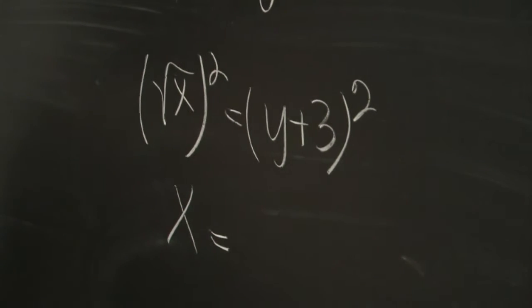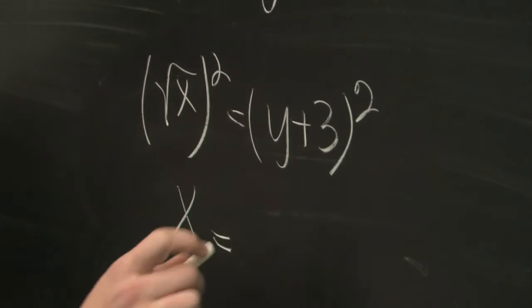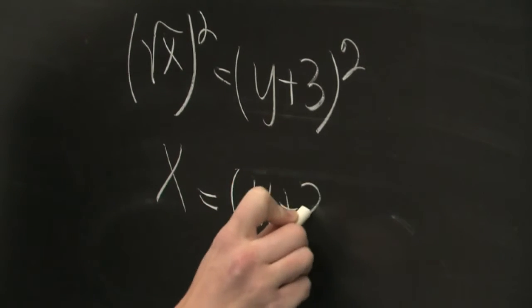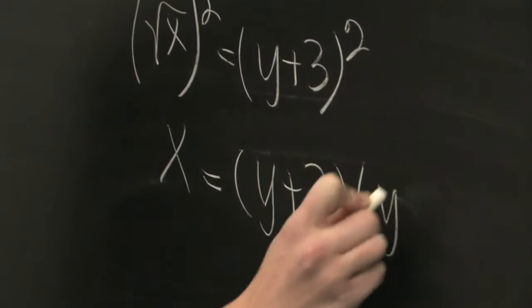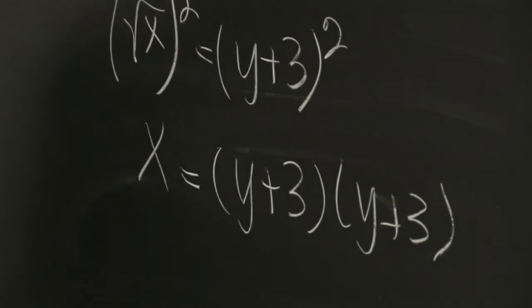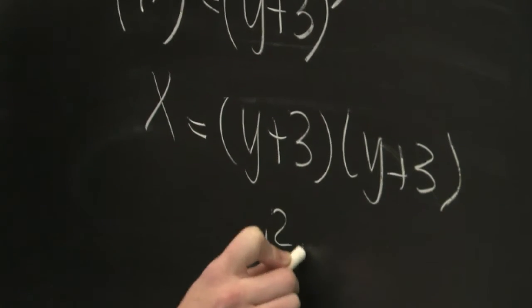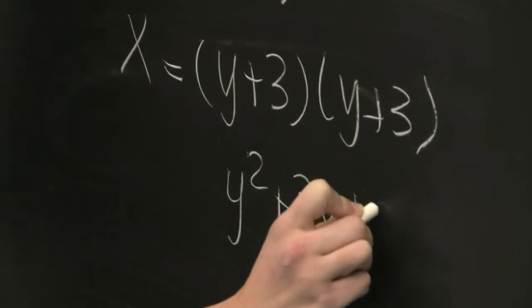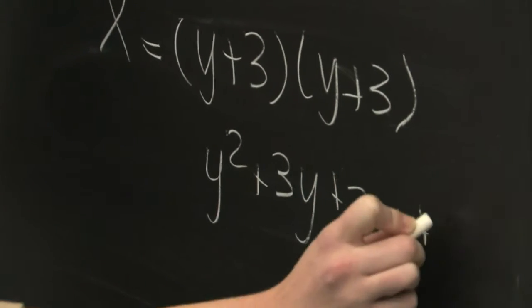and then we're left to FOIL the right hand side, where we multiply the first terms, times the outer term, add the inner term, and then the last.